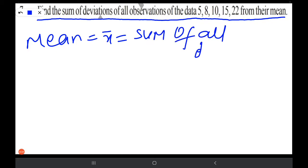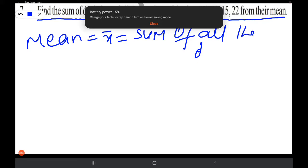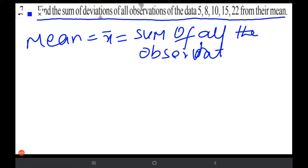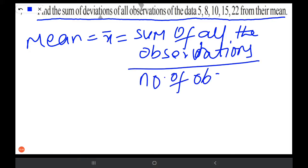So here we have to find the mean first. Mean is nothing but sum of all the observations by number of observations.